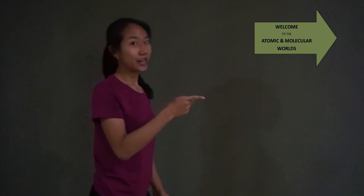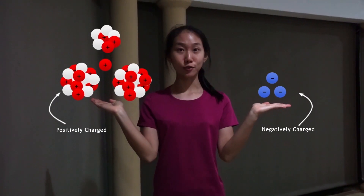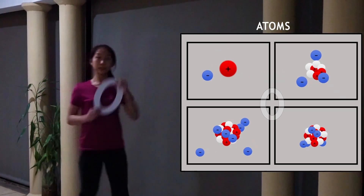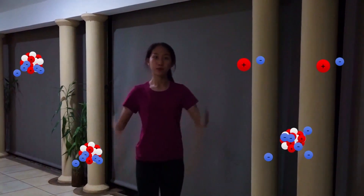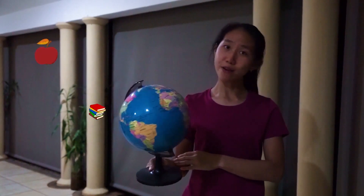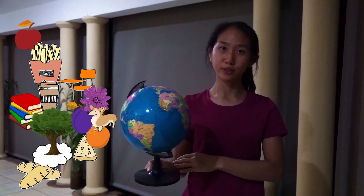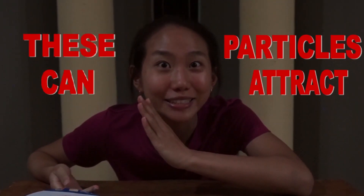Follow me through the atomic and molecular world, where negative electrons and positive nuclei reside. Their charges cancel to zero when they form atoms. Atoms form molecules, and these particles build pretty much everything around us. But even with zero charge, these particles can attract!